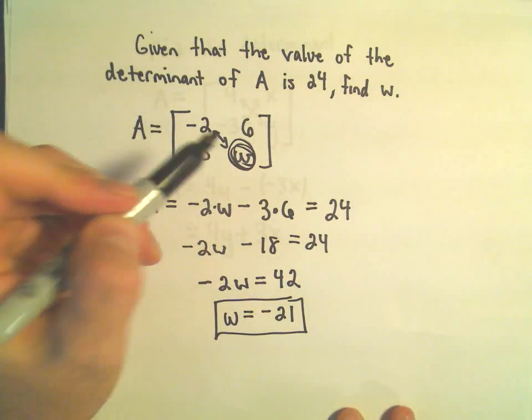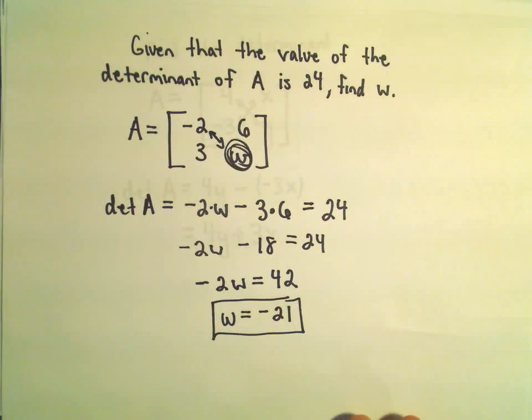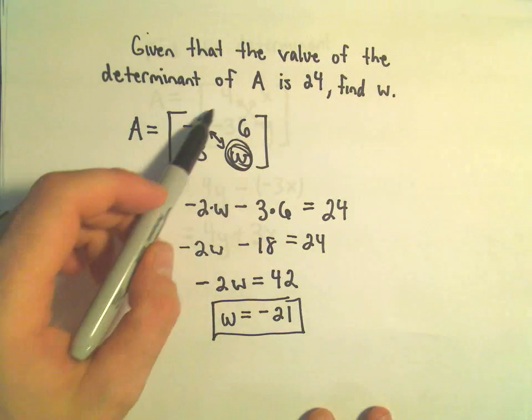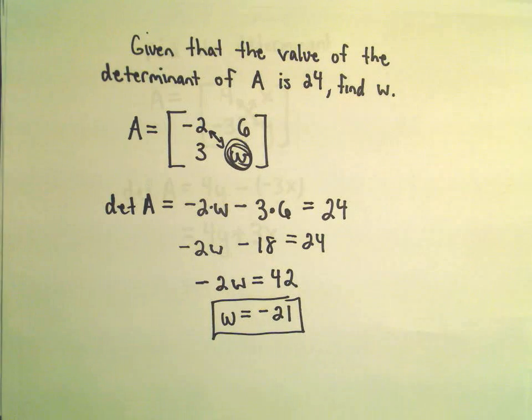So, we would basically have to have a negative 21 in the bottom right corner of our matrix so that this determinant equals 24.